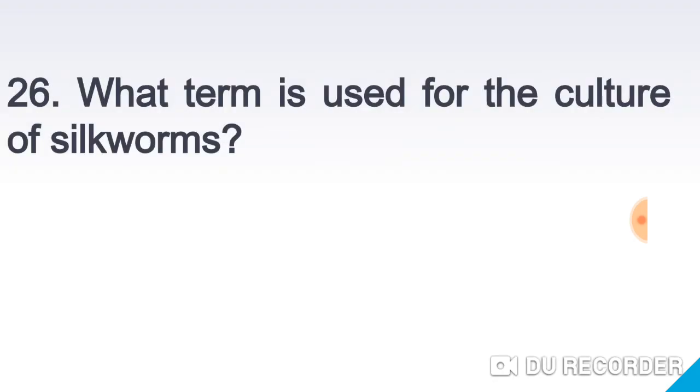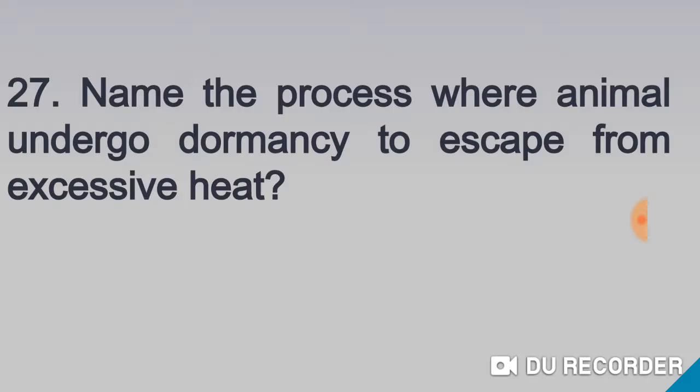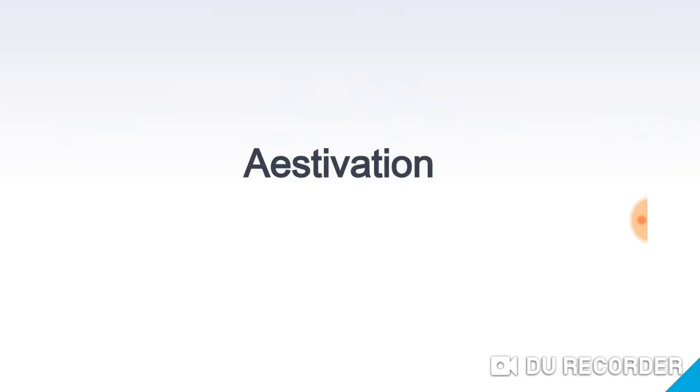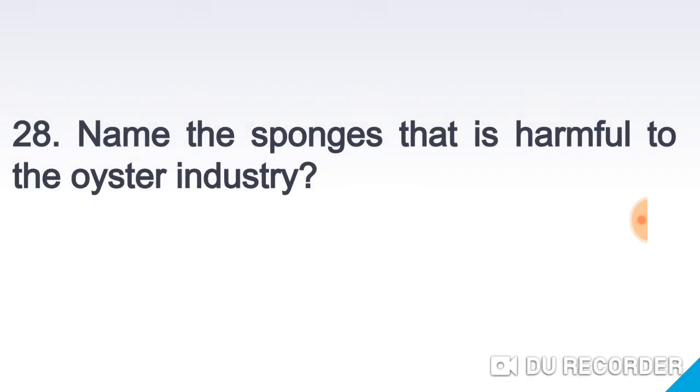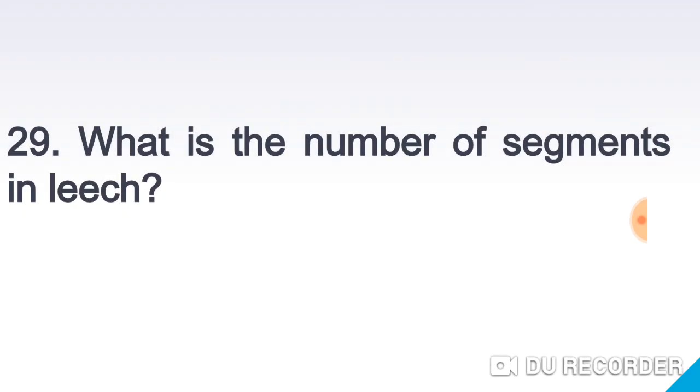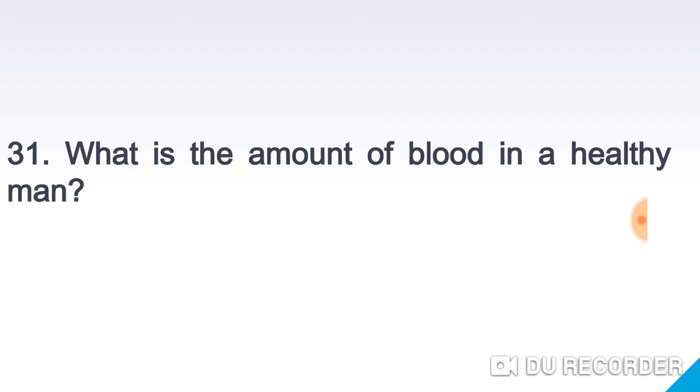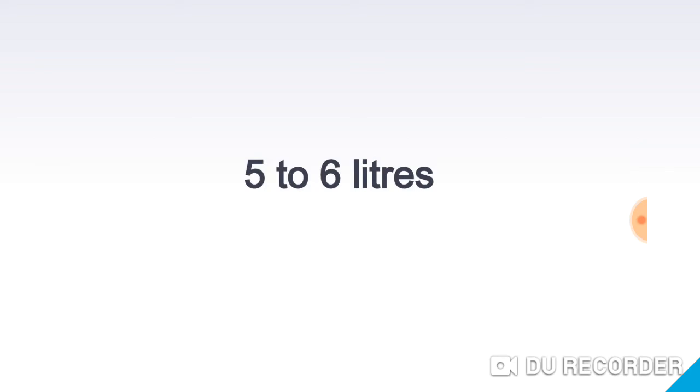What is the unit of energy? Joule. To which animal does the word Maurice refer? Buffalo. What term is used for the culture of silkworms? Sericulture. Name the process where animals undergo dormancy to escape from excessive heat? Aestivation. Name the sponge that is harmful to the oyster industry? Cliona. What is the number of segments in leech? 33. Name the term used to refer beekeeping and rearing of bees? Apiculture. What is the amount of blood in a healthy man? 5 to 6 liters.